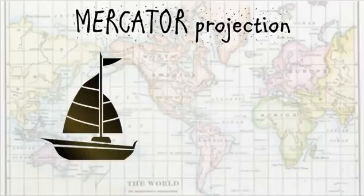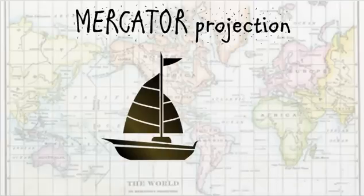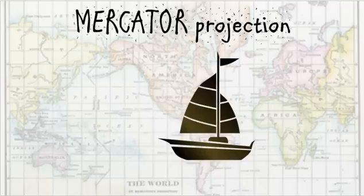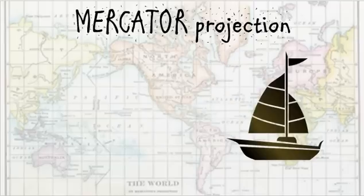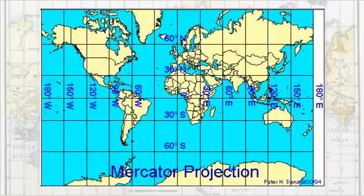The Mercator projection was designed in 1569 for nautical navigation, as it preserved direction and kept sailors on course. If they set a constant bearing on their compass according to their Mercator map, they would always be accurate in their navigation. But again, this projection heavily distorted the size of features toward the poles, but this was no concern for sailors, really.